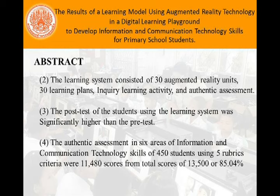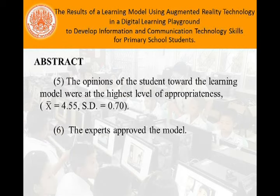Third, the post-test scores of students using the learning system were significantly higher than the pre-test. Fourth, the authentic assessment in six areas of information and communication technology skills for 450 students using five rubric criteria yielded 11,480 scores from a total of 13,500 scores, or 85.04 percent. Fifth, the opinions of the students toward the learning model were at the highest level of appropriateness. Sixth, the experts approved the model.